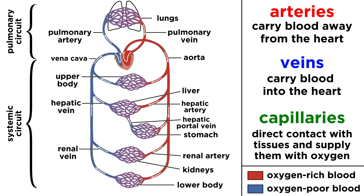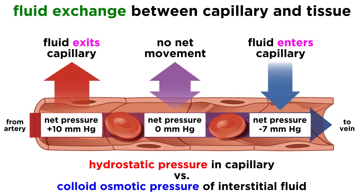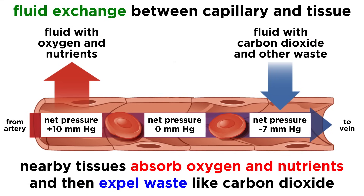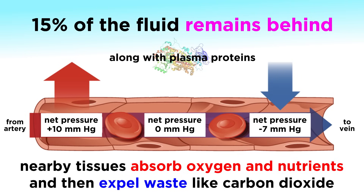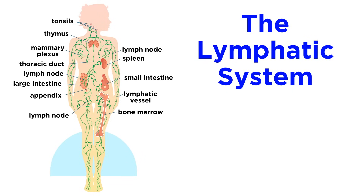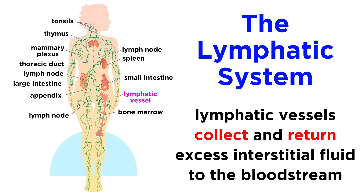As the blood makes its way through the body, it enters capillary beds, and it is here that hydrostatic and colloid osmotic pressures force some of the fluid out of the blood to join the interstitial fluid. This allows for oxygen and various nutrients to be absorbed by nearby tissues. Most of this fluid is reabsorbed into the capillaries at the venous end, but not all of it. Around fifteen percent remains behind, along with important plasma proteins. This would be a problem, as the bloodstream certainly can't continuously lose so much volume.